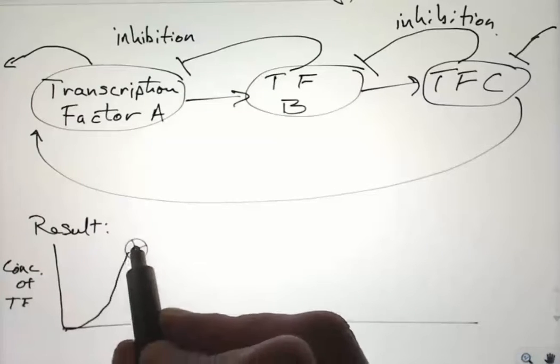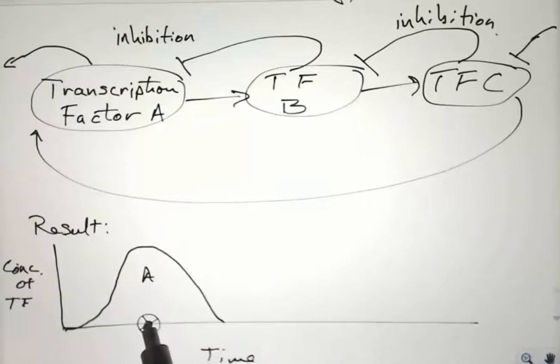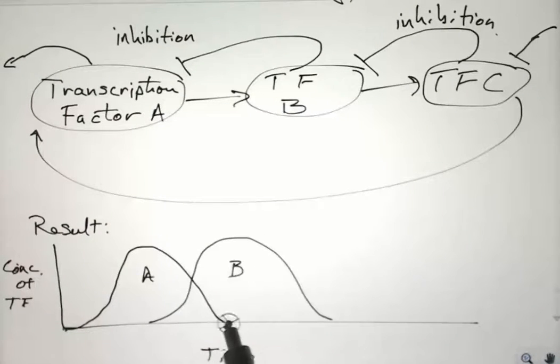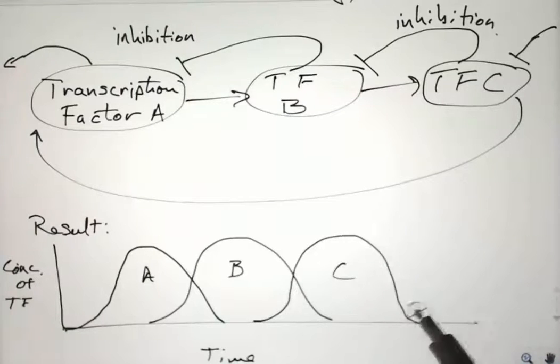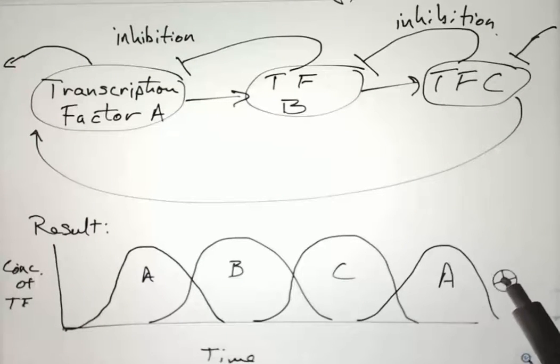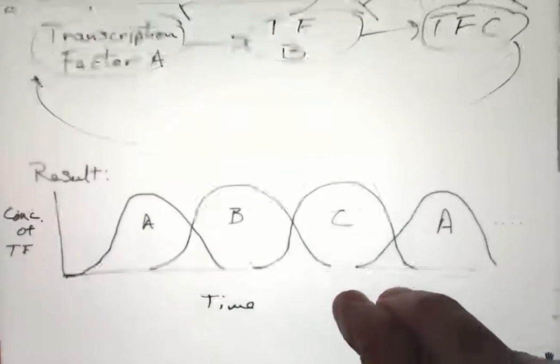The result will be that you'll get a rise in transcription factor A, followed by B, followed by C. Then you start again, starting by A, and so on, starting back with A again.